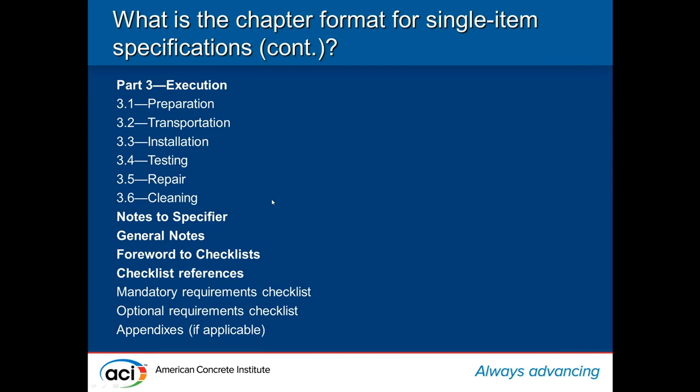Then your notes to specifier, general notes, and forward to checklists — these are all in the TCM as well. These three items, the notes to specifier, general notes, and forward to checklists, you take verbatim out of the TCM. You can find that information on page 36. The copy says 'ACI specification XXX' — you just drop in the number of your spec. You also have your forward to checklist, and if you have any mandatory or optional requirements checklists, you can add them. Pages 36 and 37 have examples of what those look like. Checklist references follow the same commentary format as codes, guides, and reports.